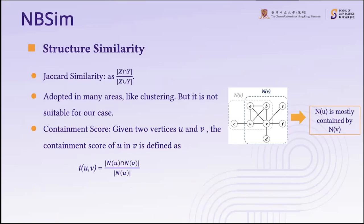Let me introduce some concepts about structural similarity. Given two sets x and y, the Jaccard similarity is defined as the intersection of x and y divided by the union of x and y. Jaccard similarity is used in many areas, but we think it is not suitable for our case. As you can see in this picture, when nu is mostly contained by nv, we instead propose a containment score: given two vertices u and v, the containment score of u in v is defined as the intersection of N(u) and N(v) divided by |N(u)|, which we find more suitable for our case.